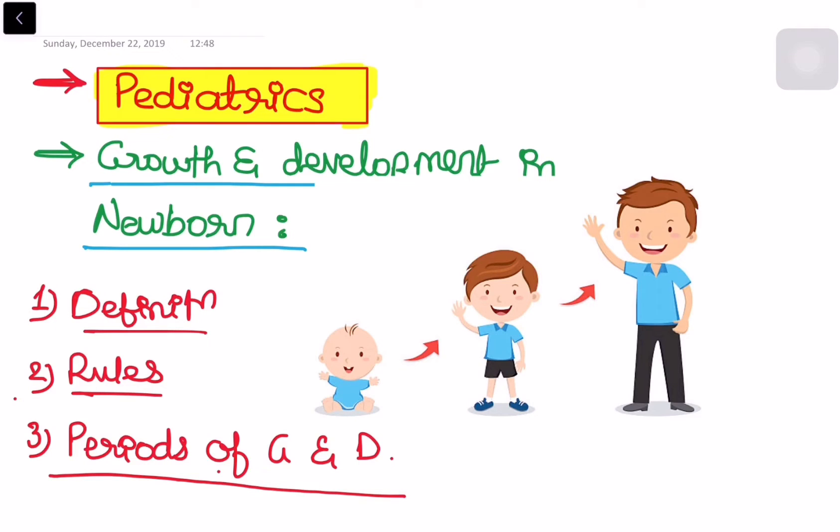First one is the definition of growth and development. Second is rules of growth and development and third is the main period of growth and development.